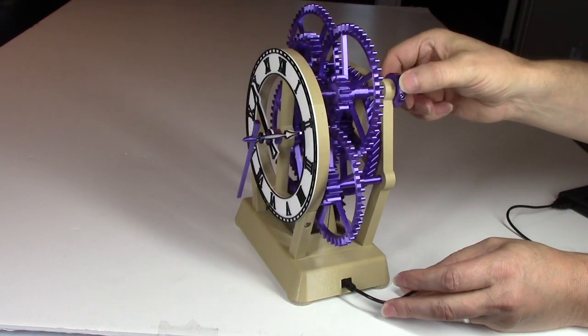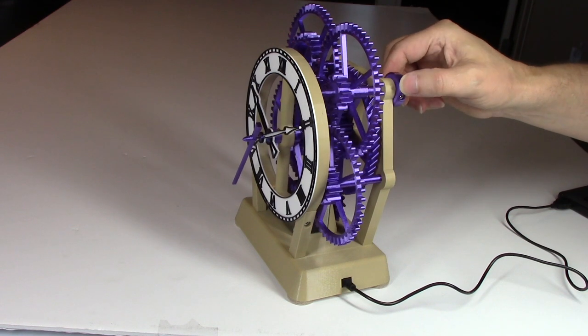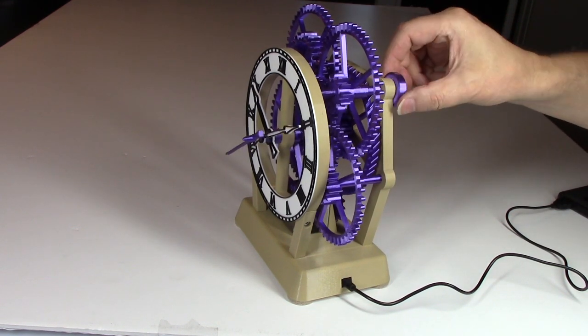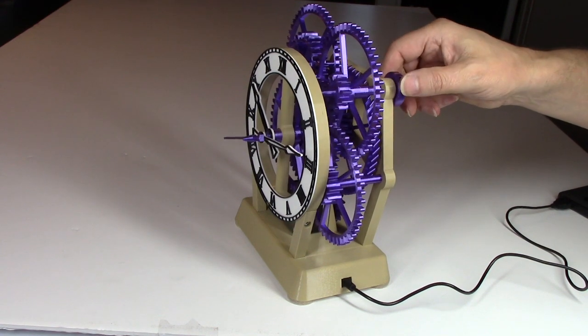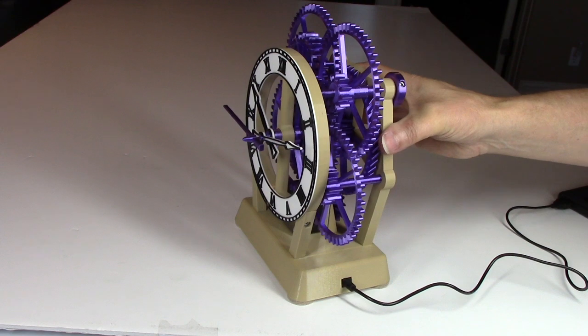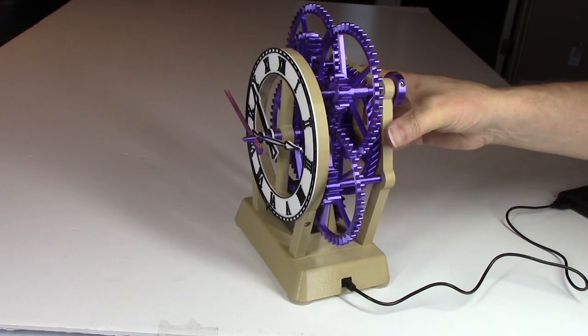This is the time adjustment knob. There's a friction clutch inside here that allows the minute hand to spin without interfering with the second hand and allows you to change the time without interfering with the motor.